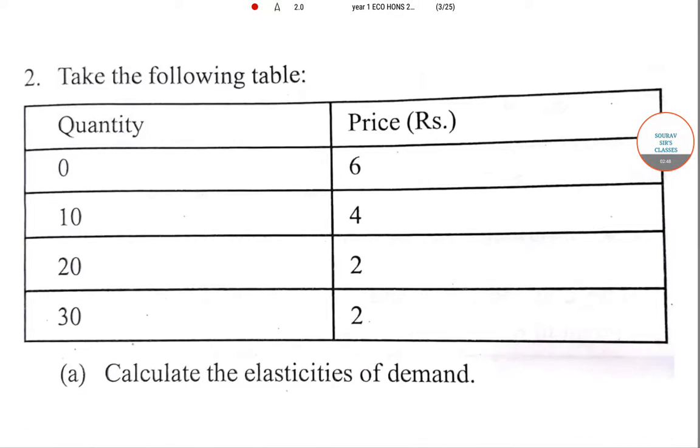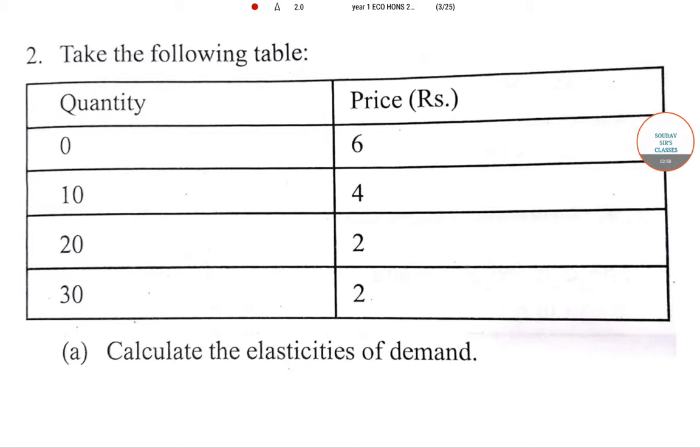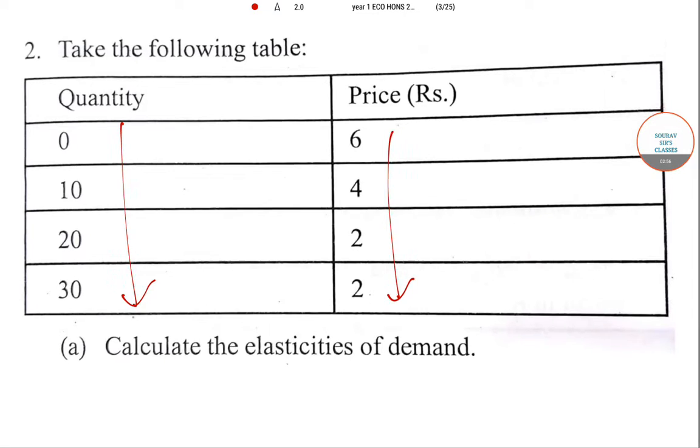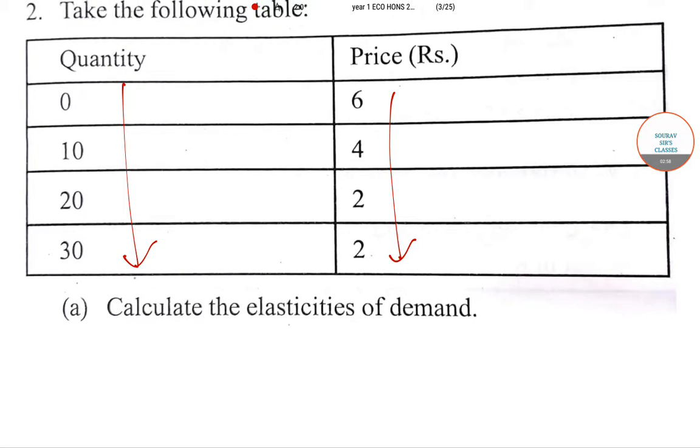Now we have a table where quantity Q = 0. As the quantity increases, you can see the price is decreasing. Calculate the elasticity of demand. You can take any two points and calculate. I'm taking this area, and every time it will be changing.